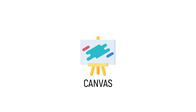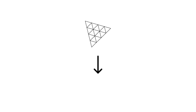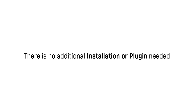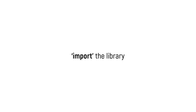A canvas is an HTML component that is part of the HTML5 specification and allows you to display graphic rendering. Three.js via JavaScript allows you to drive WebGL and render 3D. The crazy part is that there's no additional installation or plugin needed — just import the library and the 3D world is opened.